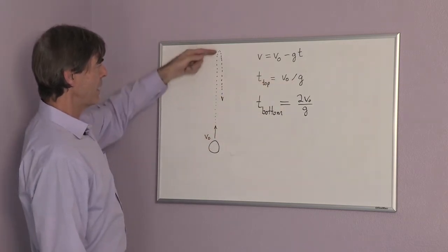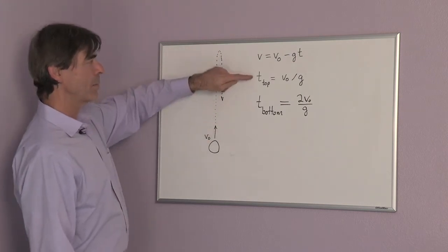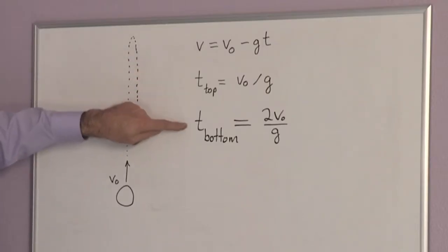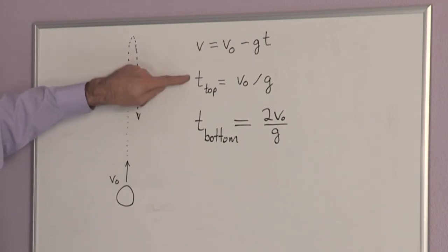Now, the time it takes to come back down again is the same as the time it took to come up, and so t-bottom is twice t-top, and that is 2 times v0 divided by g.